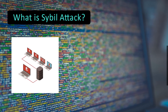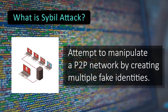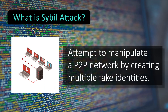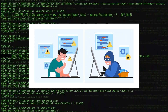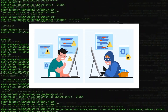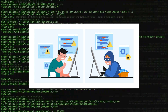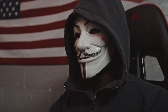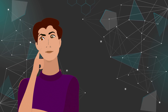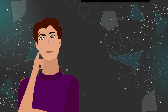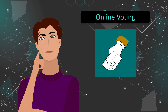A Sybil attack is an attempt to manipulate a peer-to-peer network by creating multiple fake identities. To the observer, these different identities look like regular users, but behind the scenes a single entity controls all these fake entities at once. This type of attack is important to consider especially when you think about online voting.